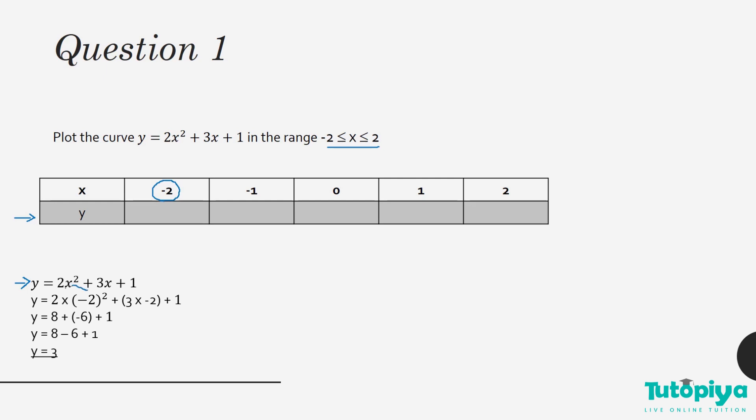We substitute x = −2 into the equation: 2 × (−2)² + 3 × (−2) + 1. Since (−2)² = 4, we get 2 × 4 = 8, and 3 × (−2) = −6, so 8 − 6 + 1 = 3. Therefore y = 3 when x = −2, giving the coordinate (−2, 3).